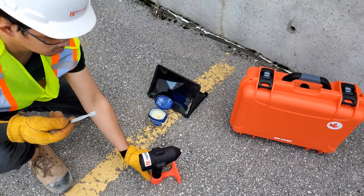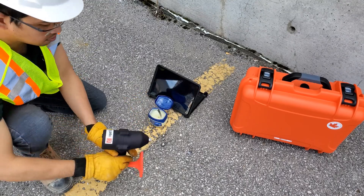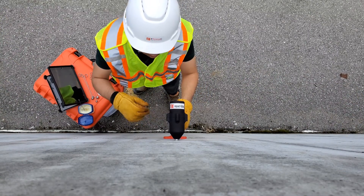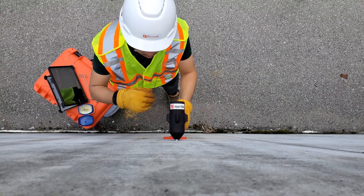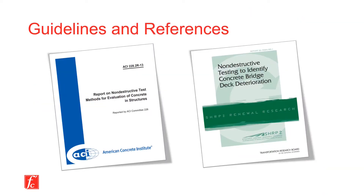ImpactEcho method is an advanced non-destructive test method for structural integrity testing of concrete structures. The test has been widely used to evaluate thin concrete plates such as bridge decks and parking garage slabs. The ASTM C-1383-15 sets the standard test method for measuring the P wave speed in the thickness of concrete plates using the ImpactEcho method. Different technical committees have also studied the effectiveness of the ImpactEcho test for evaluating concrete elements.